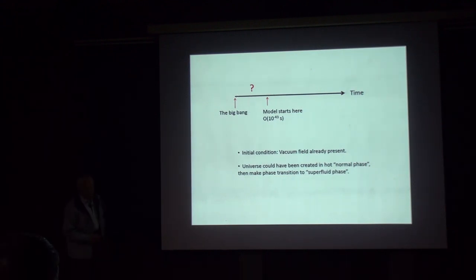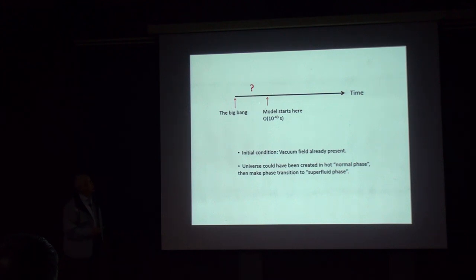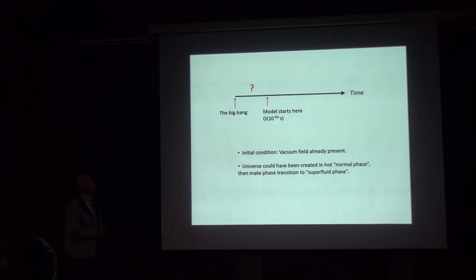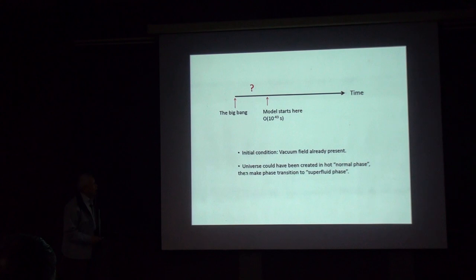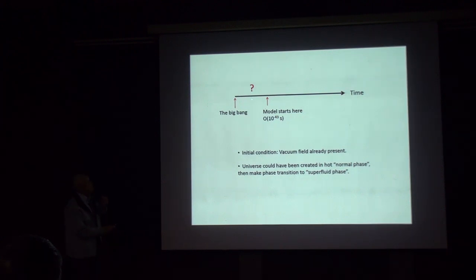To summarize: we cannot go all the way back to the Big Bang because the constraint has a factor of one over A, which diverges at A equals zero. So we start the model somewhat after the Big Bang, say at 10 to the minus 43 seconds, already with a superfluid present, and watch how it develops according to Einstein's equations. The universe could have been created in a hot normal phase that cooled down into a superfluid; our assumption is that we start with a superfluid.